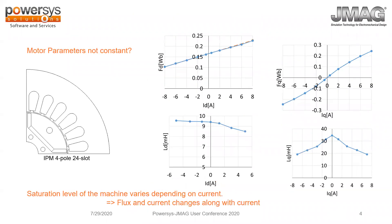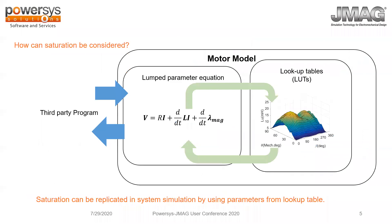Why are motor parameters not constant? Because as current changes, the saturation level of the machine varies. As you can see on the graphs, it very well describes why motor parameters are not constant. How can saturation be considered? Saturation can be replicated in a system simulation by using parameters from a lookup table. We can create a lookup table that encapsulates all these saturation effects, which can then be used in system simulations.